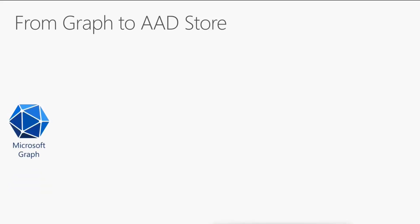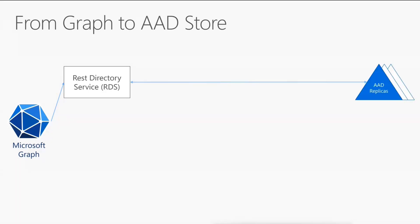Now let's see what actually happened under the hood. Here is how a call gets from Microsoft Graph all the way down to our directory tools. We have Microsoft Graph that we all know and love, and when it receives a request for an identity workload — a request for users, groups, or devices objects — it would call internally our service that manages the directory object, called the REST directory service. That ultimately executes the read-write operation to the AAD store, which is highly available with replicas all around the world. This is a pretty simple architecture: a front-end service layer and a back-end store.